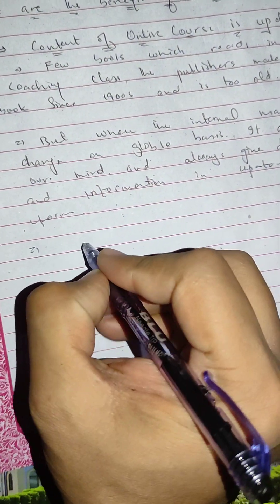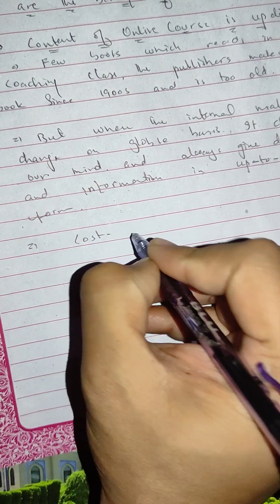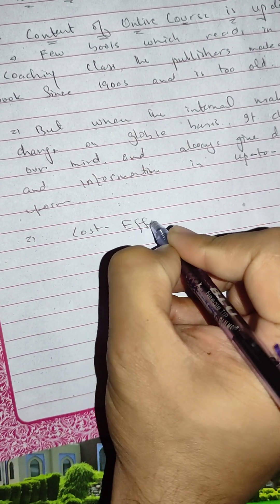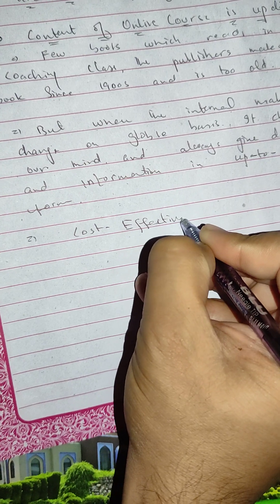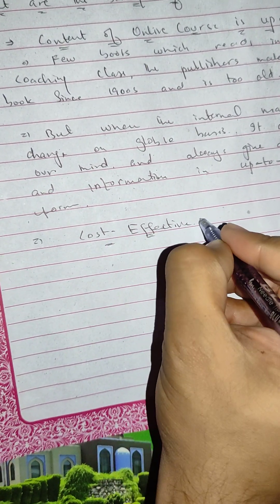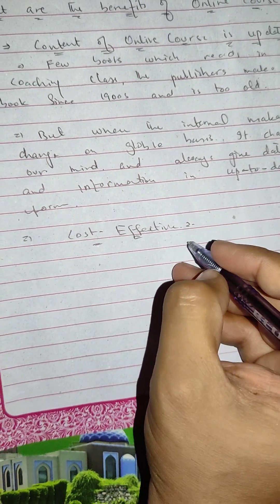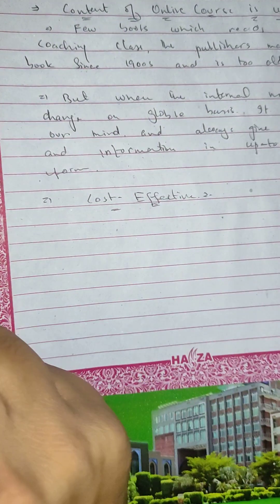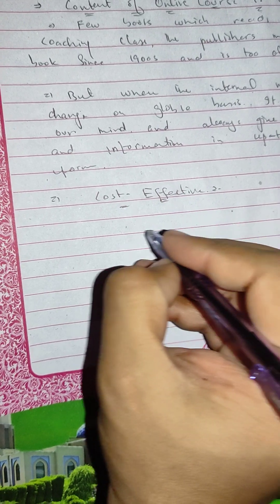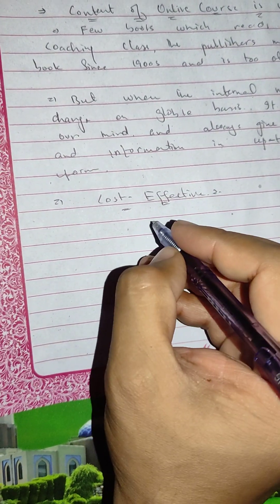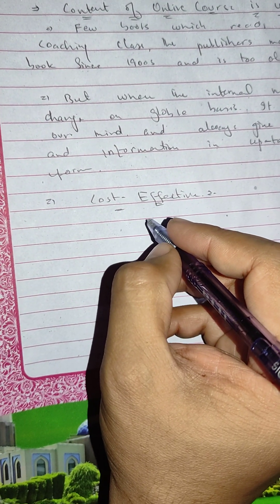And the second one is cost effectiveness. In physical classes, we give a lot of money to our teachers and other people for administrative costs.